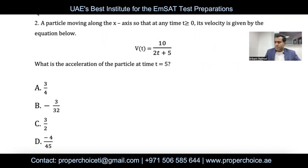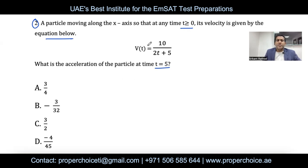The question asks: what is the acceleration of the particle at t = 5? To go from velocity to acceleration, you differentiate the velocity function. If a position function is given, differentiate to get velocity; if velocity is given, differentiate to get acceleration.